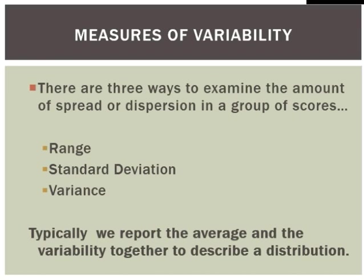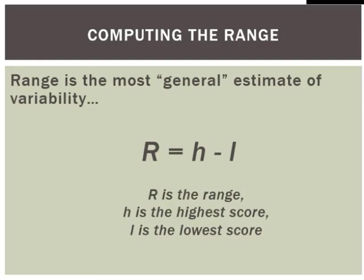Just like with central tendency, there are several different ways we can do that. Range is really the coarsest metric we can use — it does nothing more than look at our two extreme values, the lowest and the highest, and calculates the distance between the two. This isn't necessarily very useful for understanding the distribution of the full population, but it does come in handy when we're doing modeling, because any models we create are really not going to be valid outside of the range of input values used to create that model.